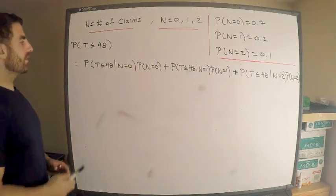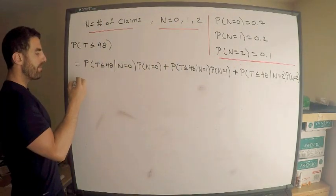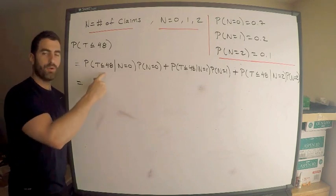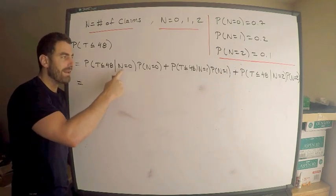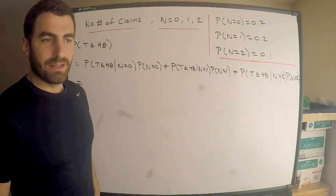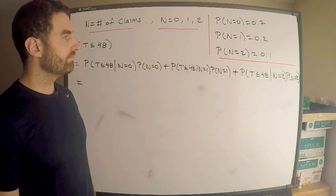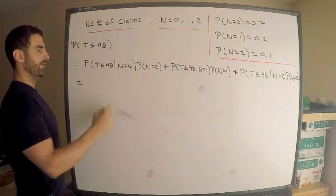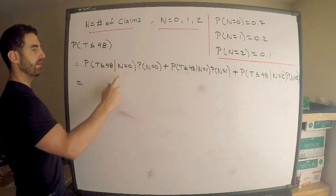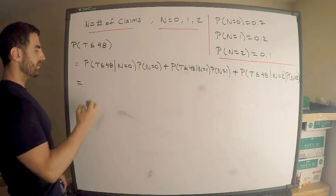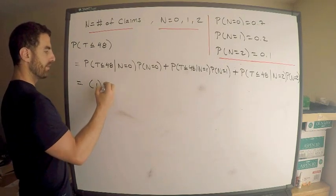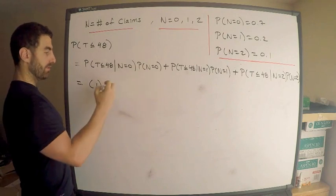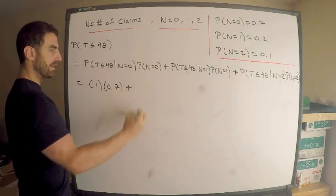Now, what is the probability that the total benefit paid is less than or equal to 48 given that this individual filed no claims? Think about it a second. This is one. This is one right here. Yeah, I'm just going to write that. So this is one times the probability N is zero. This is 0.7 plus,